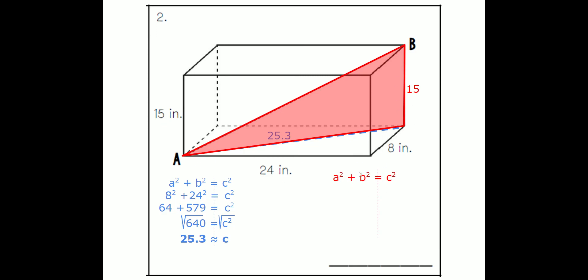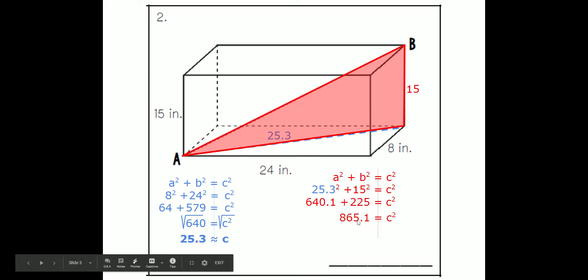We can set up our equation. A squared is going to be 25.3. B squared is 15 squared. Multiply those out. Add them up. We get 865.1. And now we need to square root it, and we get roughly 29.4 is our answer.